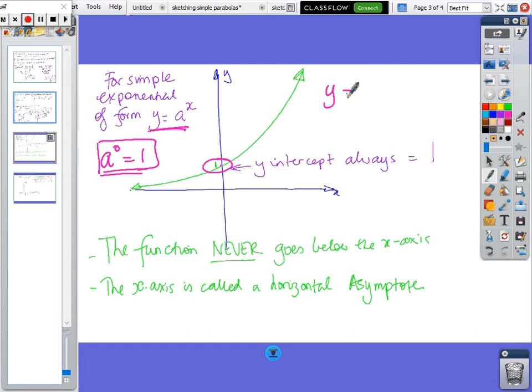But for instance, if the function was 4 times - if that was the function - 4 times 2 to the x, then the y-intercept would be 4, but I haven't put any numbers in front.